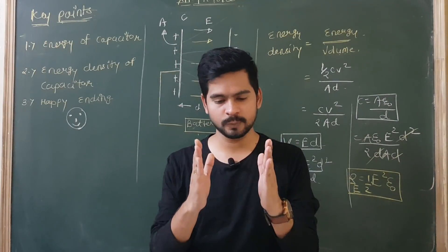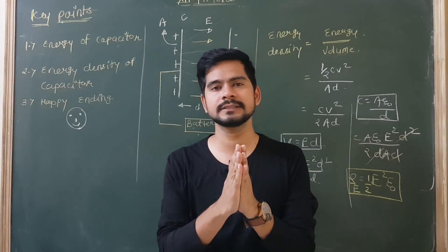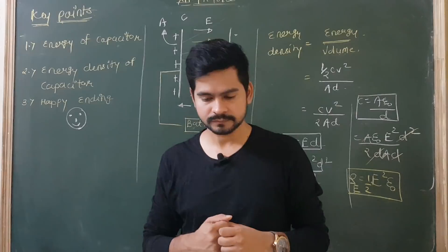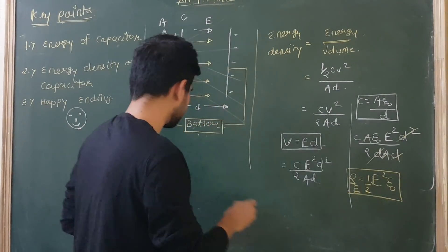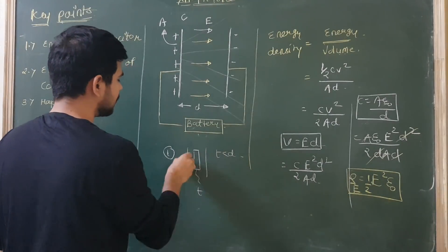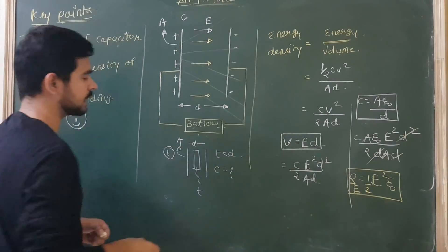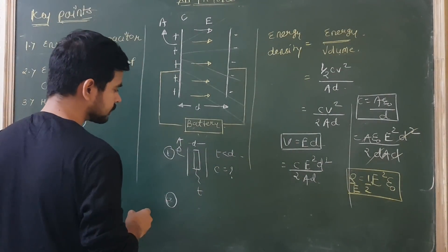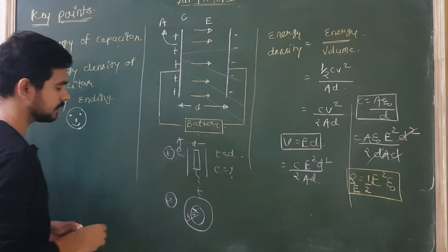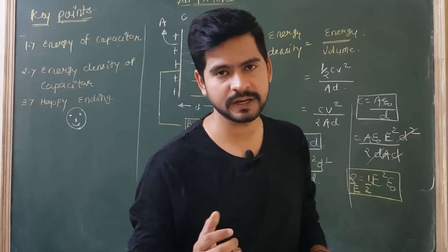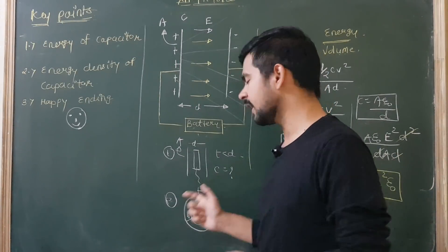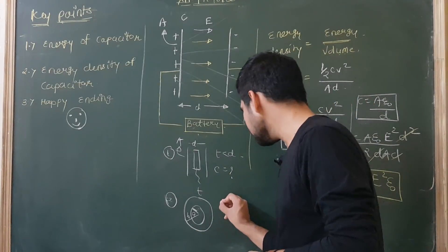In the last video I asked: if a slab of thickness t (less than d) is placed between two plates of a parallel plate capacitor with area A and plate separation d, what is the capacitance? And in this video I'm asking: what will be the capacitance of a spherical capacitor configuration with two hollow spherical plates — one of radius a (positively charged) and another of radius b (negatively charged)? We'll discuss it next class.